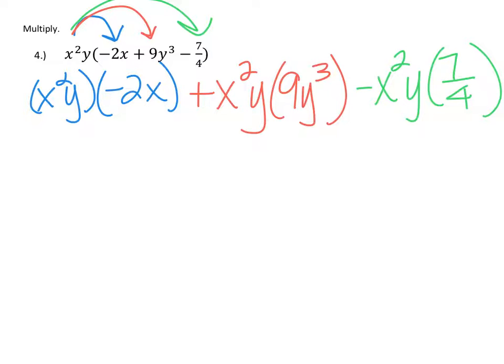We're going to multiply and keep the base and add the exponents. Bring the -2 coefficient to the front, then we have x² times x—add the exponents to get x³. We have a y here with no other y's to multiply, so we just rewrite it.